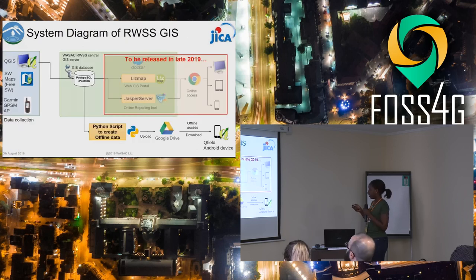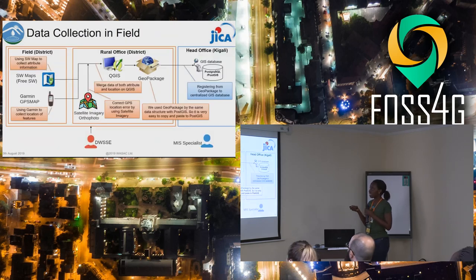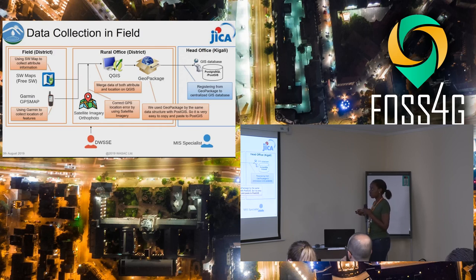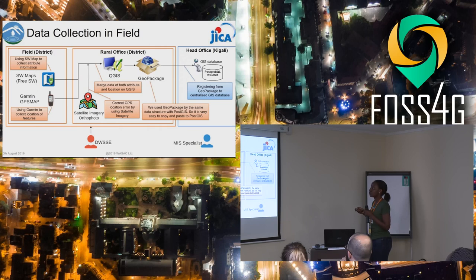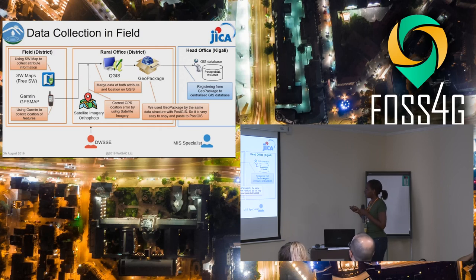This diagram shows the full process. For data collection we use GPS and SW Map. SW Map is not open source, but it's easier to record attributes and information you need to fill in. To correct GPS location errors, we use satellite imagery. Then we match data, attributes, and location in QGIS. We use the QGIS package with the same data structure as PostGIS, so it was very easy to copy data to PostGIS.